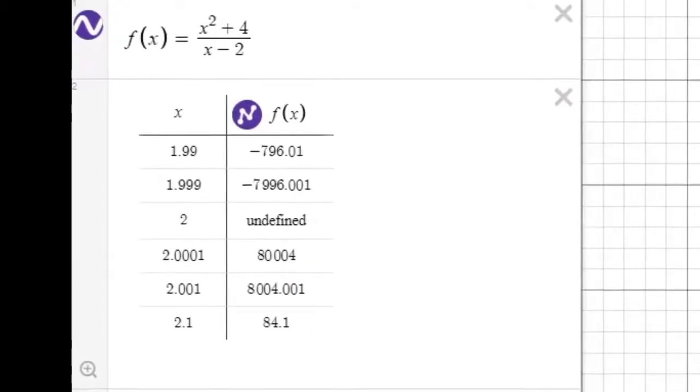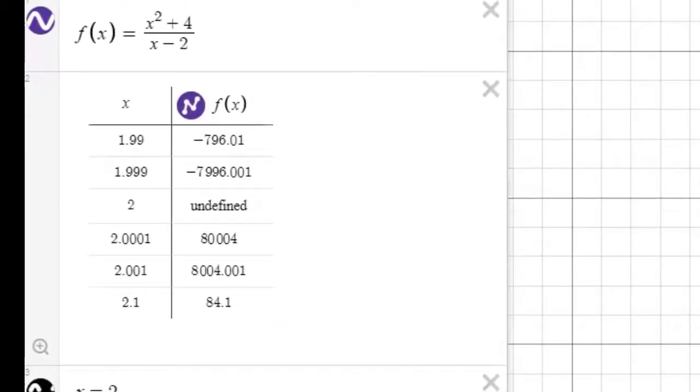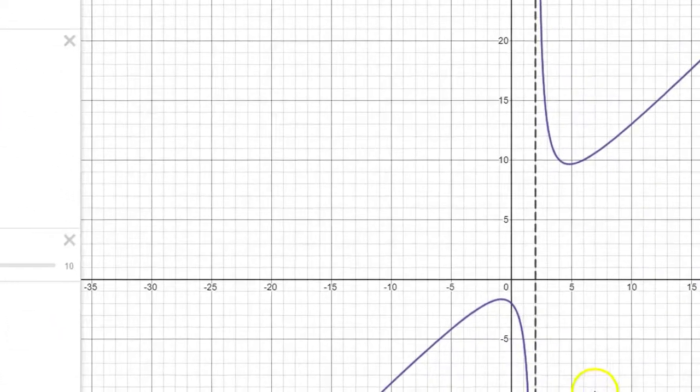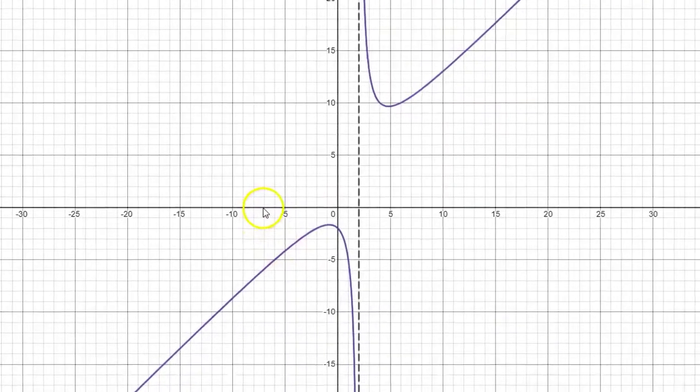But what about for values of x, the input quantity, when we're to the left of 2, like quantities like 1.999? Again, going back to the graph,